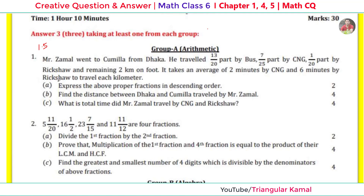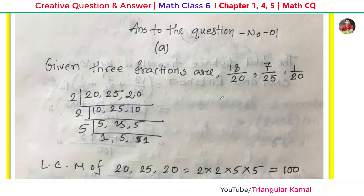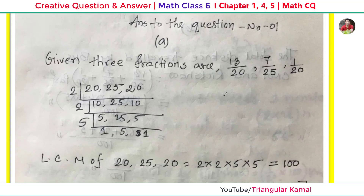The first sub-question asks us to express the proper fractions in descending order. The three fractions are 13/20, 7/25, and 1/20. To find the descending order, the first step is to find the LCM of all denominators: 20, 25, and 20. Their LCM is 100.